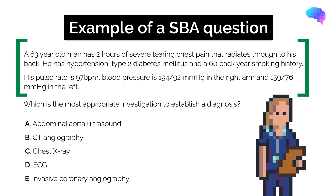Here the stem gives us a scenario of a 63-year-old man who has had two hours of severe tearing chest pain that radiates through to his back. We are then given further information about his past medical history — hypertension, type 2 diabetes, and a 60 pack year smoking history. Finally, we are given clinical examination findings including a pulse rate and two blood pressure readings.